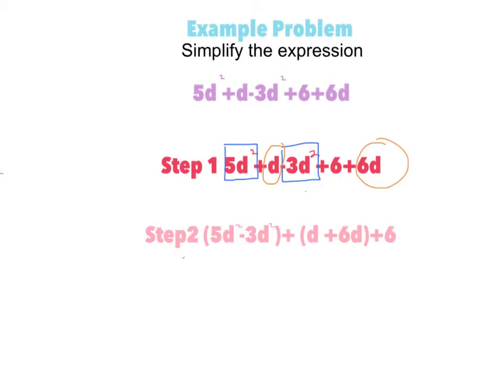We take the two numbers in the square and then put them right next to each other using grouping symbols. 5d squared minus 3d squared is together plus d plus 6d is together plus 6. Plus 6 doesn't have a partner that matches together. So what we did here is that we simplified this problem.